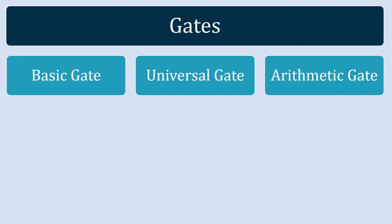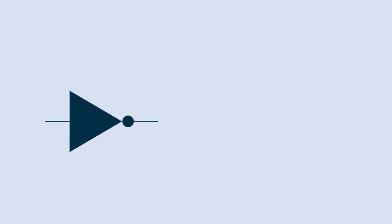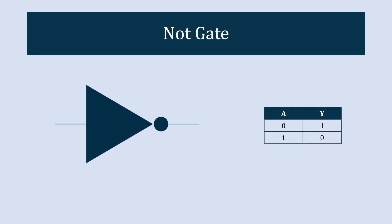The first gate under the category of basic gates is known as the NOT gate. The symbolic representation of the NOT gate is a triangle with a circle at the input. The truth table of the NOT gate shows that the output is always opposite to the input.